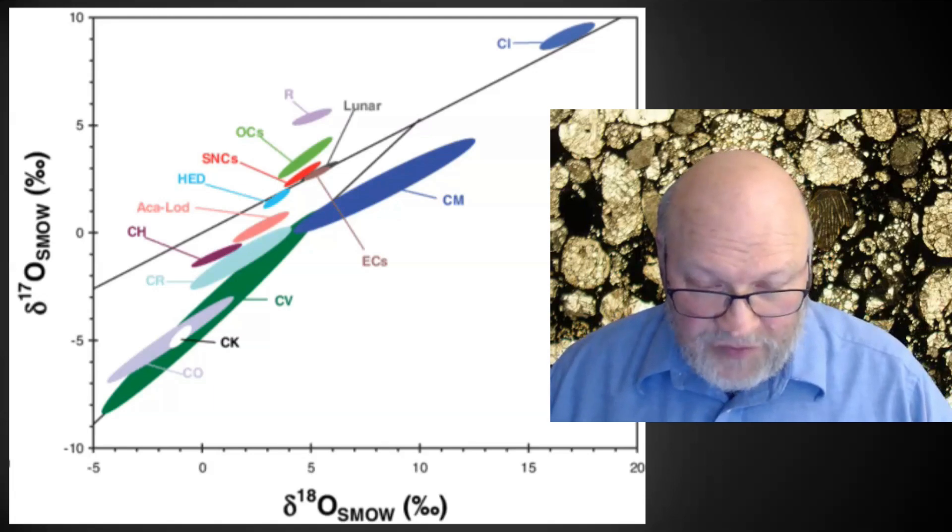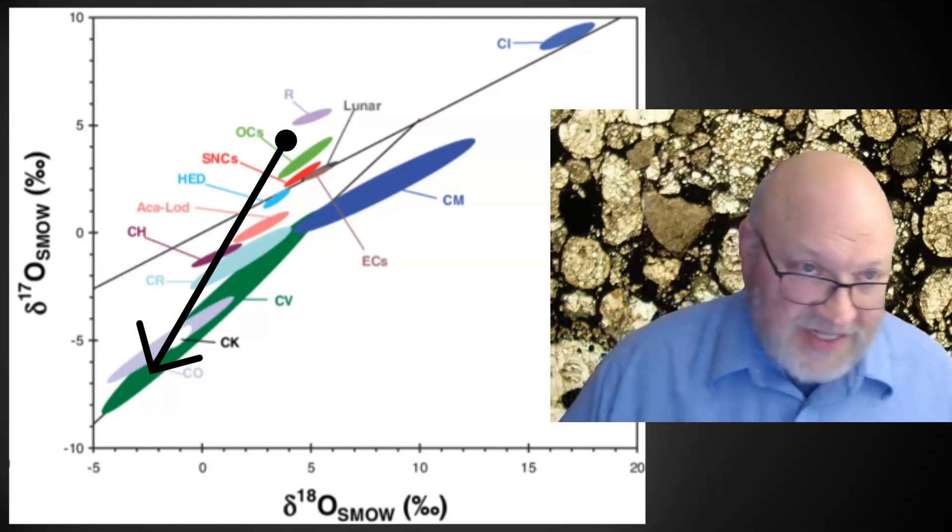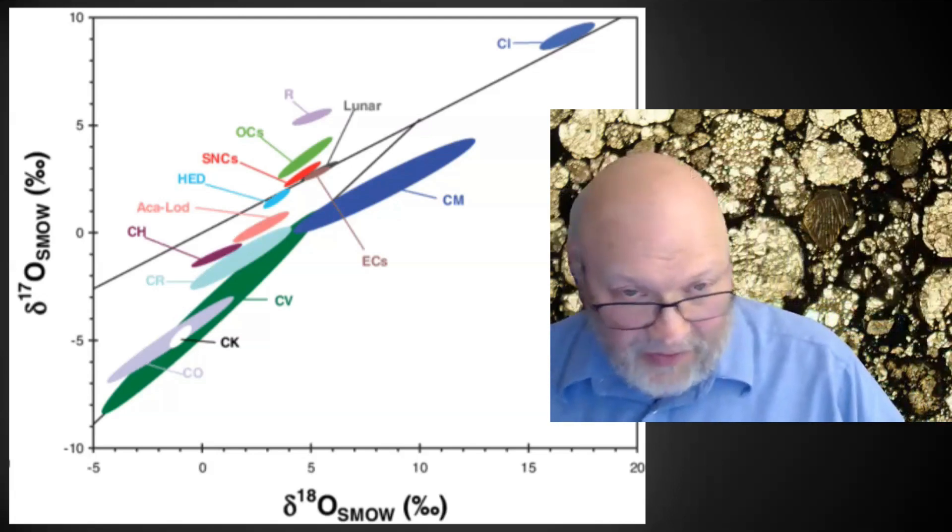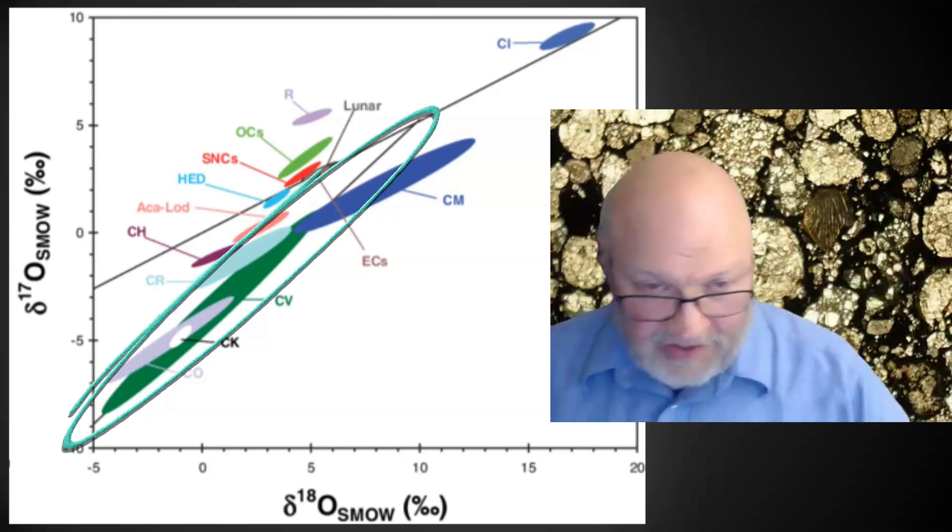And as you move to the lower left, you're getting to more O-16-rich samples. The CAIs we see are falling on that other line, the one that has the CVs, CKs, COs, and so forth on it.